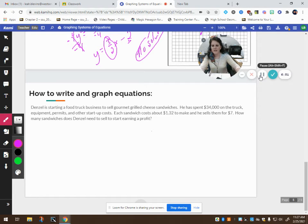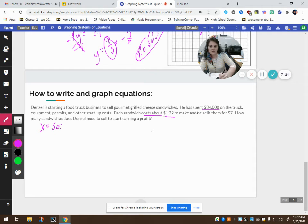For our last problem it says, Denzel is starting a food truck business to sell gourmet grilled cheese sandwiches. He has spent $34,000 on the truck equipment permits and other startup costs. Each sandwich costs $1.32 to make and he sells them for $7 each. How many sandwiches does Denzel need to sell to start earning a profit? So we know that he has already spent $34,000 and we know that the cost to make a sandwich is $1.32. So what we need to do is define our variables. Let's let x represent the number of sandwiches, and we'll let y represent profit.